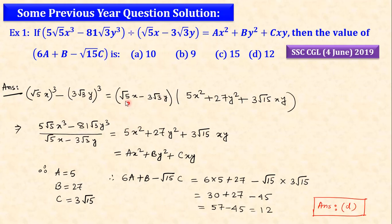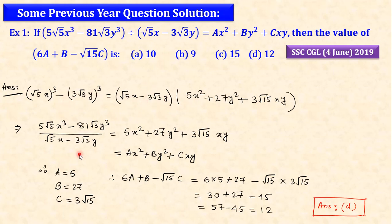The first question: let's look at the solution. We have to write root 5 x to the whole cube, root 5 to the whole cube. So we have to write this as a cube. Using the a³ minus b³ formula: a minus b into a² plus b² plus 2ab. Then we will compare the matrix y² plus by² plus cxy, and find the values of a and b. The b value is 3 root 15.